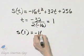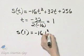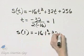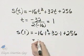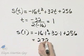S of 1 is negative 16 times 1 squared, plus 32 times 1, plus 256, and that is 272.